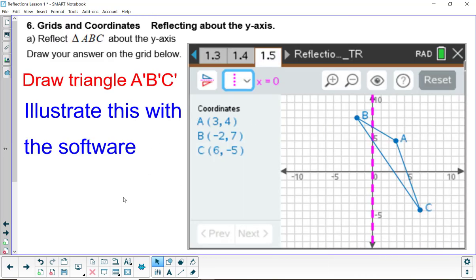All right, so let's move on to 6A. Here we're going to reflect about the y-axis, which is also the line x equals 0. So I'd like you to draw a triangle A prime, B prime, C prime, the image of this pre-image. And then we'll do this with the software. So pause as needed, reflect that triangle, draw it in.